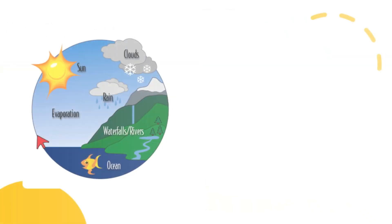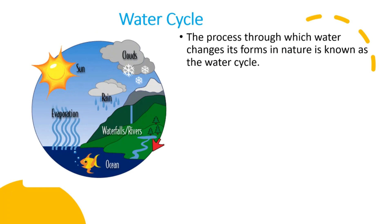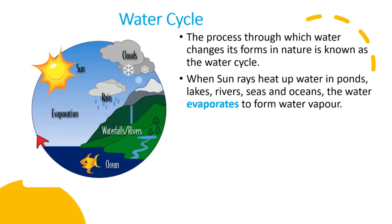Now let us see how water converts from one form into the other. The process through which water changes its forms in nature is called the water cycle. When sun rays heat up the water in ponds, lakes, rivers, seas and oceans, the water evaporates to form water vapor.